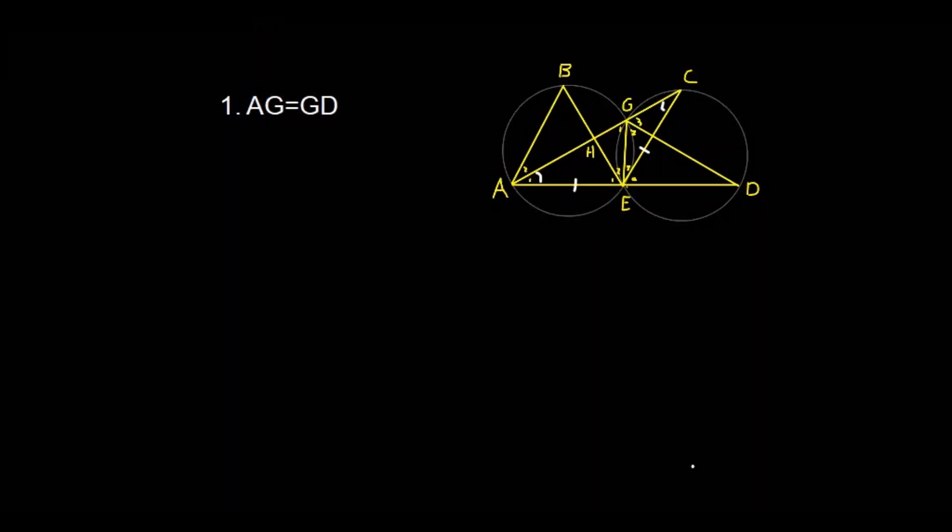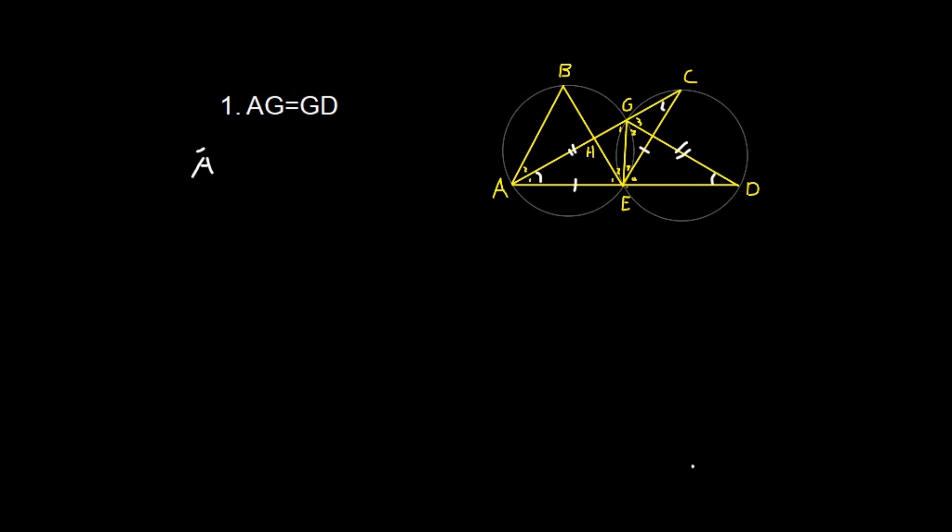Now, in order to solve the first question that says we need to find that AG is equals to GD, I told you we needed to prove that angle A is equals to angle D. And as we discussed, because D is equals to C and C is equals to A, then A is equals to D. And therefore, the two sides are equal. Alright? Let's get it. Let's write it down. We start off with the first statement. We needed to say that angle A1 is equals to angle C.